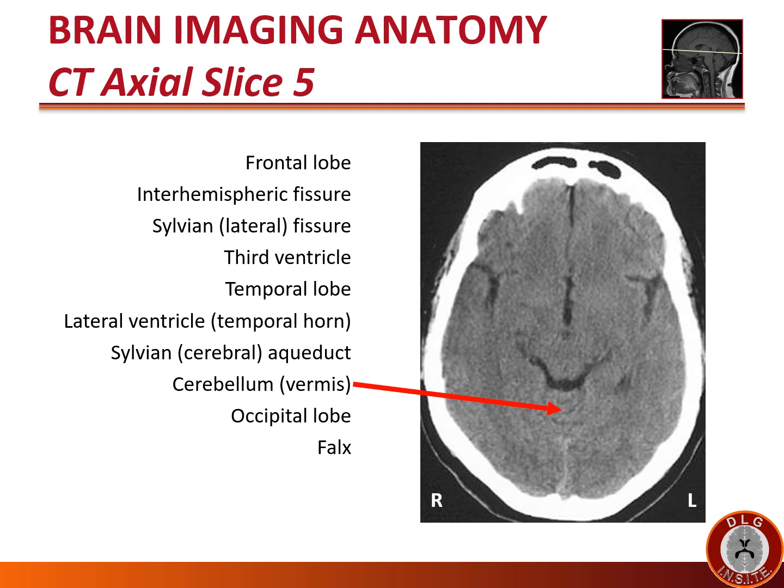We continue to see the vermis of the cerebellum right behind the quadrigeminal plate cistern. At this level we continue to see the occipital lobe behind the cerebellum. The wine goblet appearance tells us that the occipital lobe is there behind the cerebellum — the glass being the vermis and the stem being the hyperdense meninges or falx between the two occipital lobes. Here we see the hyperdense dural structure called the falx between the two cerebral hemispheres, which looks like the stem of a wine goblet at this level.